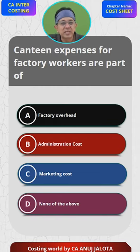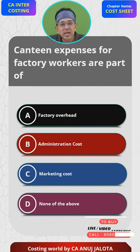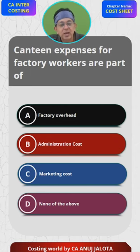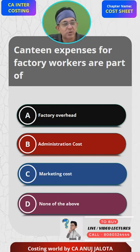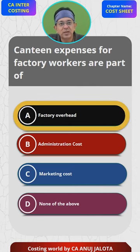A should be the better answer. If you remember the chapter on overheads, the canteen department is nothing but a service department, and any cost of a service department is always overhead for the company. So the answer is A — I'm 100% sure. If you were thinking and commented A, that is the correct one.